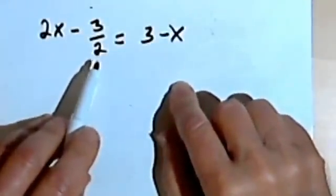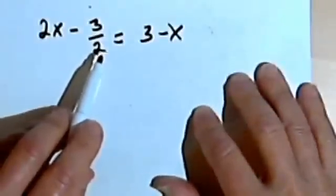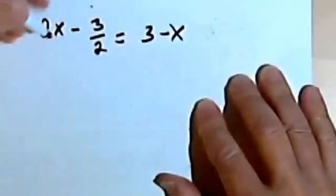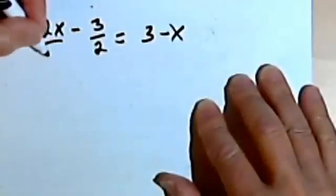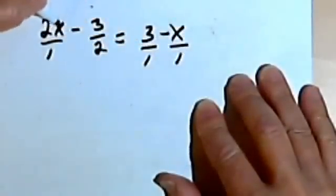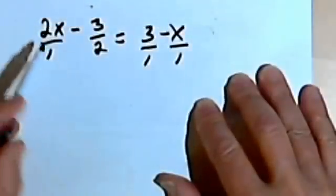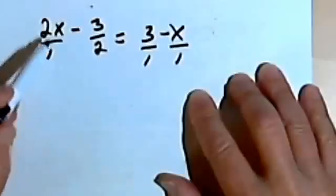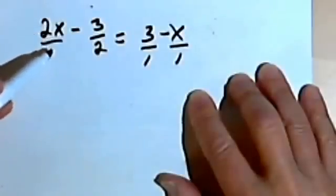Since I've got this one fraction, what I'm going to do is make everything into a fraction. In other words, I'm going to use 1 as a denominator for each one of these terms, because you can take any whole number or anything and place it over a 1 and it doesn't change anything.